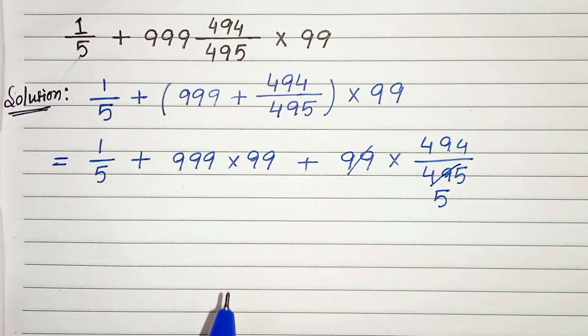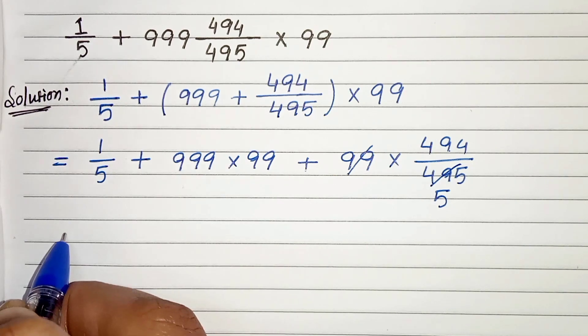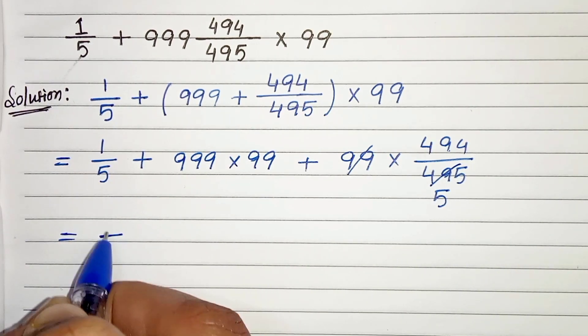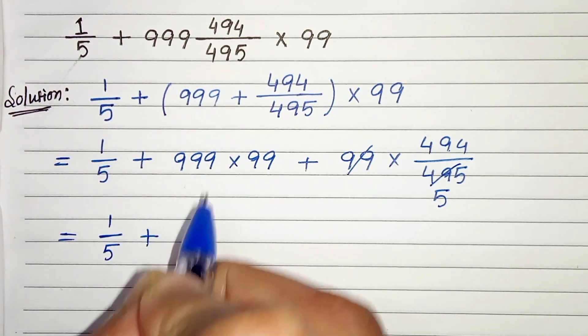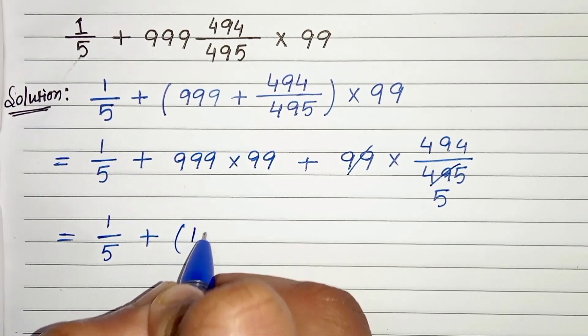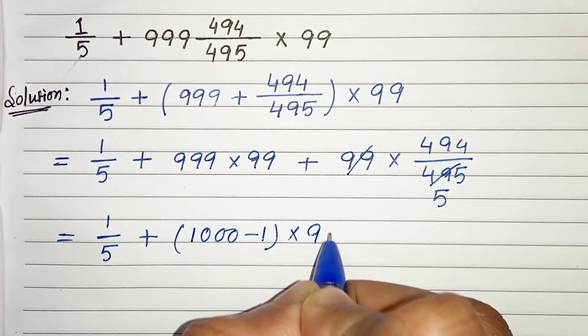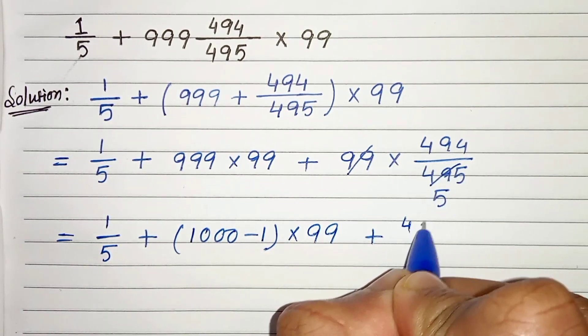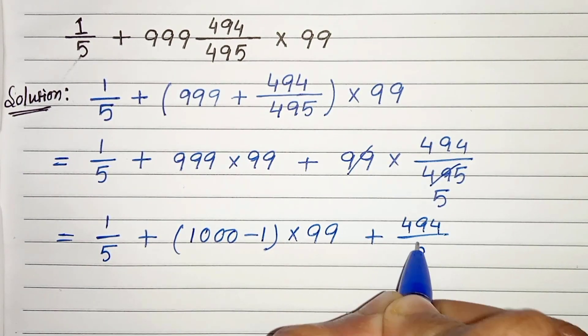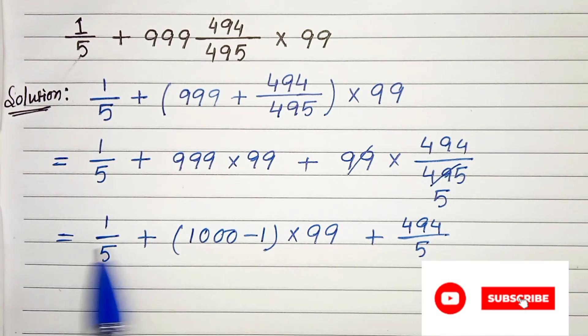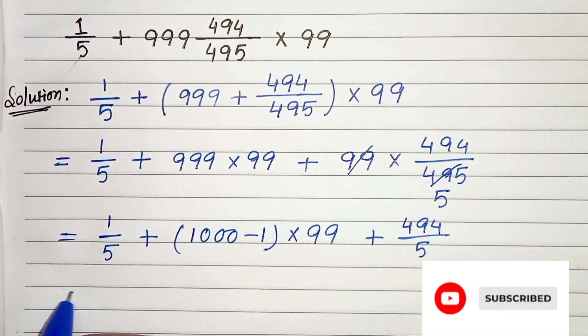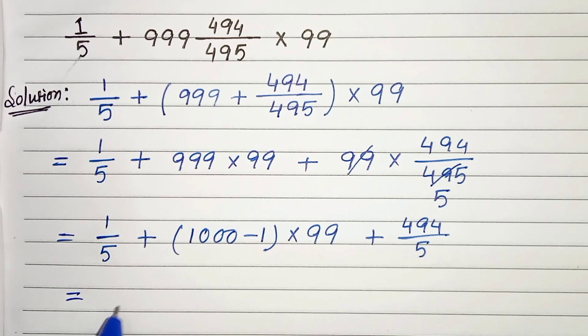So in the next step we can write 1/5 plus 999 as 1000 minus 1 times 99 plus 494/5. Now let's take the sum of these two terms.